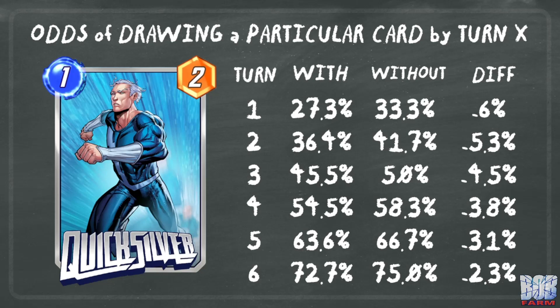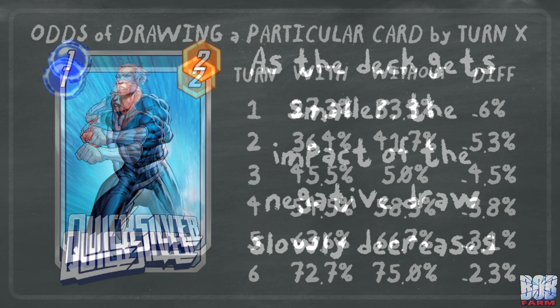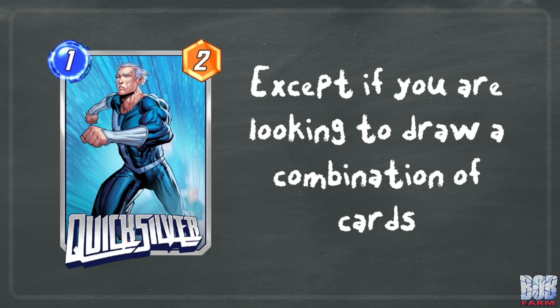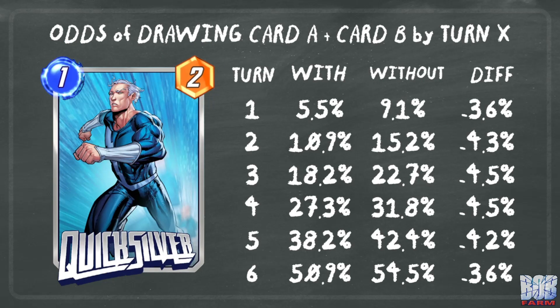The impact of America Chavez's negative draw does not take effect until turn 6, but Quicksilver lasts the whole game. We can see from this table how the odds are impacted for a given turn — the earlier turns are impacted the most. As the deck gets smaller, the impact of the negative draw does slowly decrease. However, if you are looking to draw a combination of cards, the numbers get weird: with 2 successes required from the population, the negative draw combined with the reduced population size creates a curve in the middle of the game. You are impacted most if looking to find a combination of cards by turn 3 or 4.